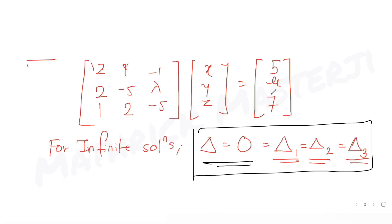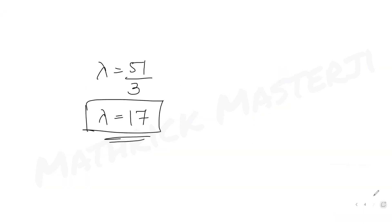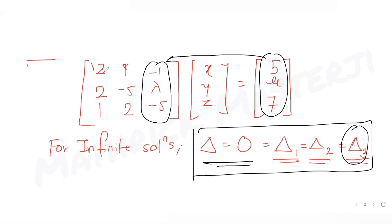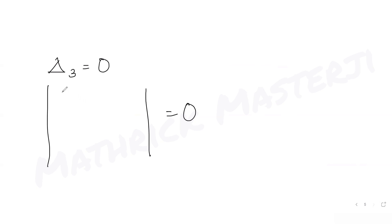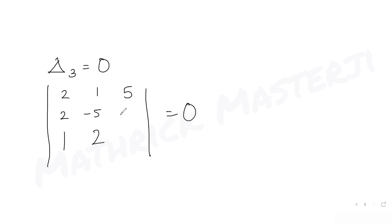Now let's find the value of μ. For this I use Δ₃ = 0, where I replace the z-coefficients with the RHS values. So the matrix becomes: |2, 1, 5; 2, -5, μ; 1, 2, 7| = 0. Expanding: 2[(-5)(7) - μ(2)] - 1[(2)(7) - μ(1)] + 5[(2)(2) - (-5)(1)] = 0, giving 2(-35 - 2μ) - 1(14 - μ) + 5(4 + 5) = 0.